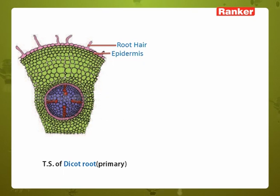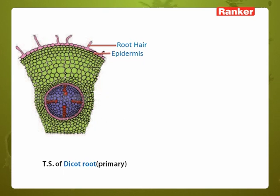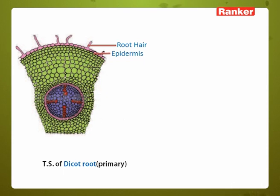It is not shown in the diagram, but the immediate next two to three layers to the epidermis is exodermis. It is the thick-walled epidermal cells, which are living cells consisting of protoplasmic content. These are normally seen in maximum number in monocot roots, dicot roots, and gymnosperms.